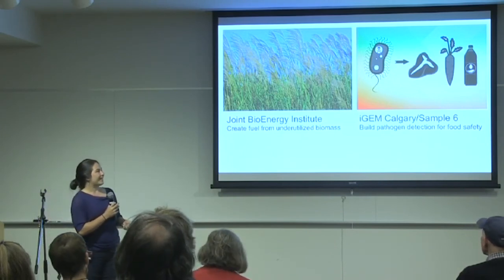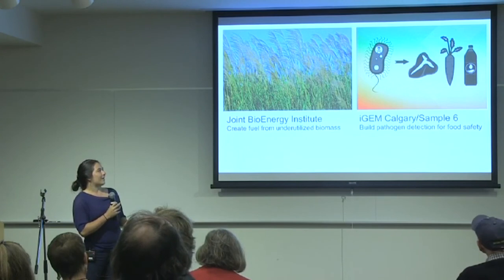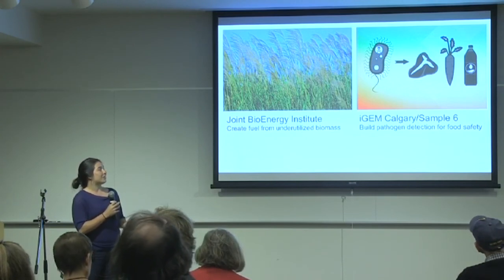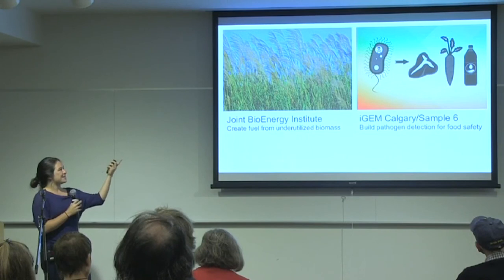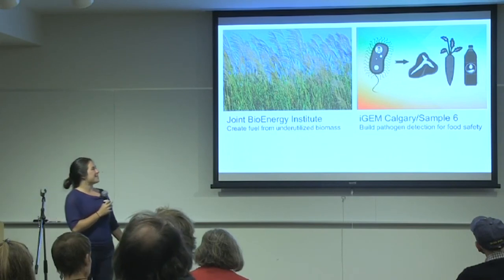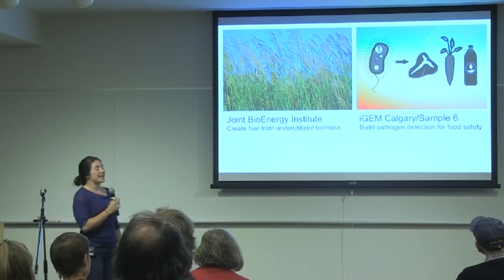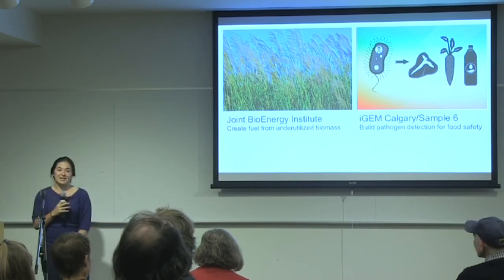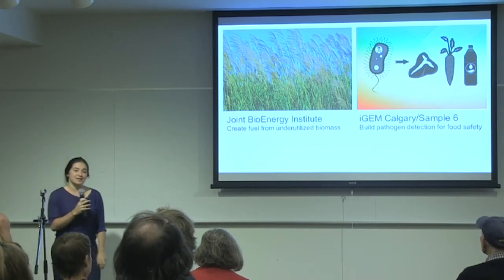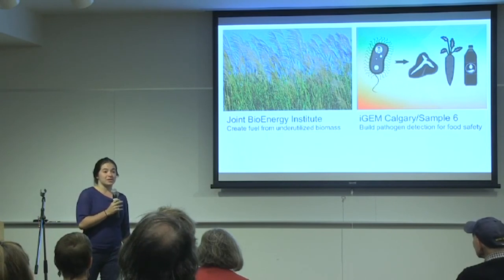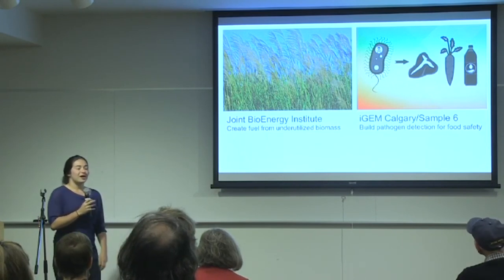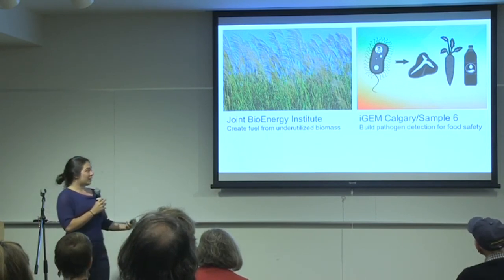Another fun one that could have some pretty good impact: this image is from the iGEM Calgary team. iGEM is a student competition for synthetic biology, and the iGEM Calgary team's project was to build a biosensor for pathogenic E. coli in meat. The idea was that if you can screen your meat as it comes through meat processing, you could end up with cheaper ways to avoid having spoiled meat reach your supermarkets.